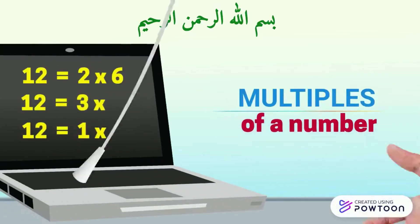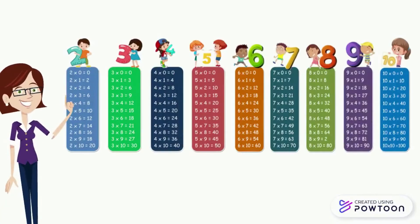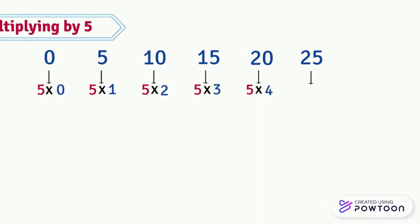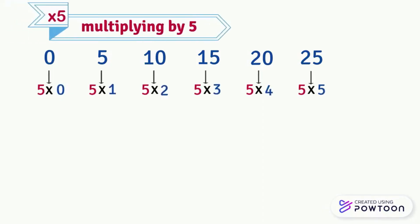Before you watch this video and understand multiples of a number, you should review the multiplication tables. We have the following number sequence: 0, 5, 10, 15, 20, etc. This is the pattern of 5 by 5, and we can notice that it is also the result of multiplying by 5.